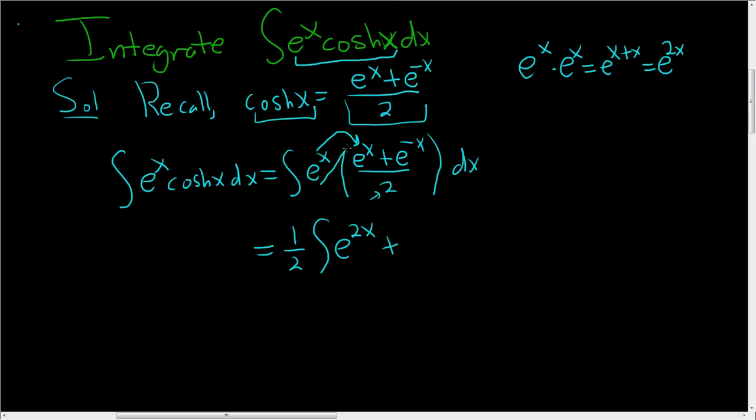plus, again, now we'll distribute e to the x times e to the negative x. So let's see, e to the x times e to the negative x. That's e to the x plus negative x. That's e to the 0 which is 1. So this will be plus 1. Don't forget the parentheses dx.